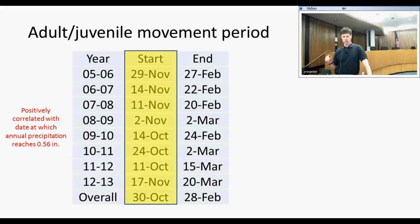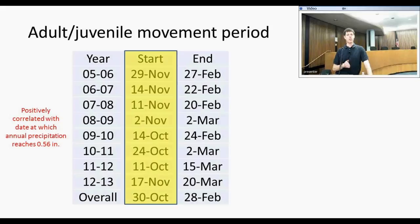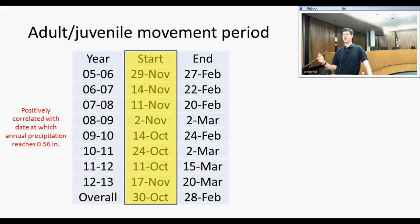For when they start moving, the start date is positively correlated with the date at which annual precipitation reaches 0.56 inches — using the California wet season, starting at the beginning of September. If the rains arrive earlier, the salamanders will come up earlier; if the rains arrive later, they'll come up later. The salamanders don't come up at the very first rain event — it needs to rain about half an inch or a little more to get the ground saturated enough that salamanders will start coming up out of their burrows.